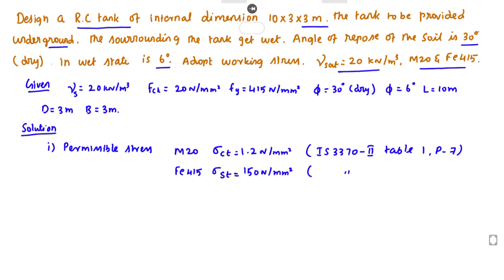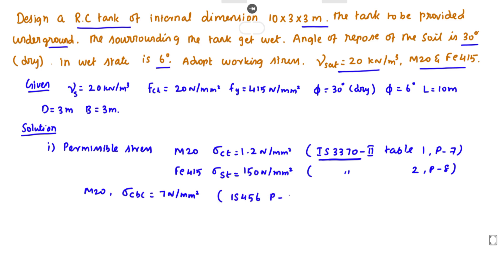The sigma ST value is obtained from IS 3370 part 2, table 2, page number 8. For M20 grade concrete, sigma CBC value is 7 N per mm square. This can be obtained from IS 456, page number 81, table number 21.